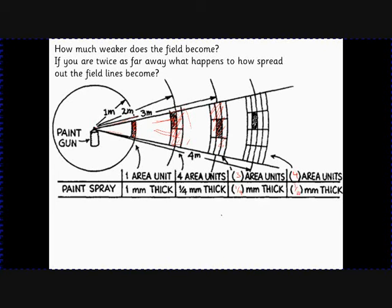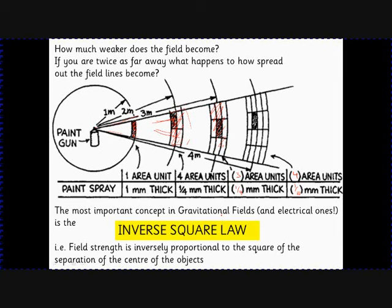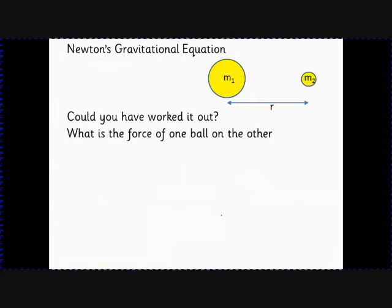This is probably the most important three words in this whole area. This is called the inverse square law. If you're twice as far away, the field strength is only a quarter as strong. If you're three times as far away, it's only a ninth as strong. This idea led to Newton's law of gravitation.